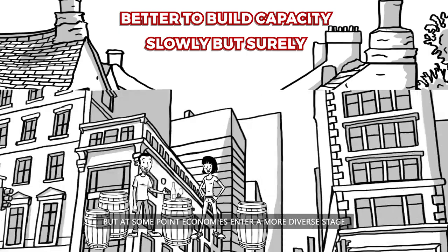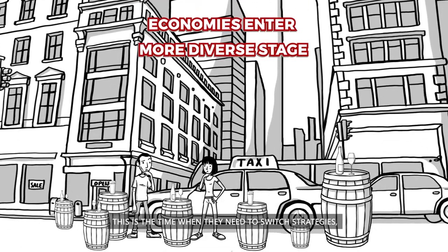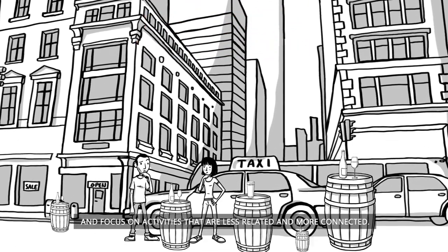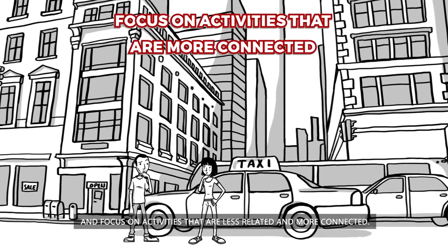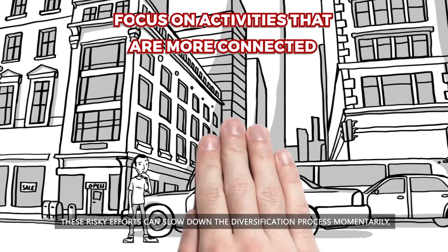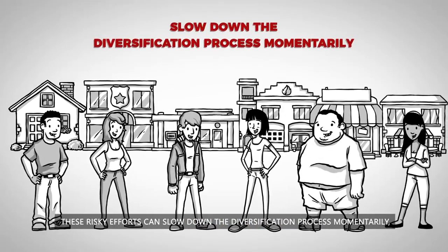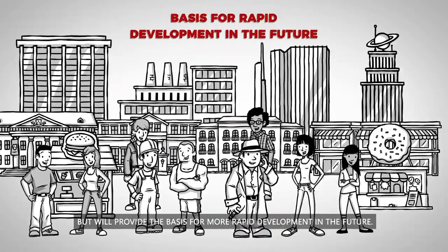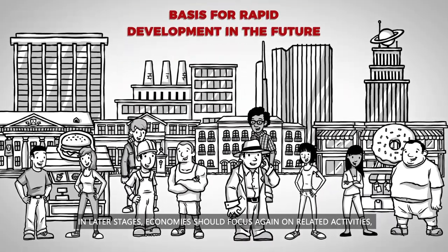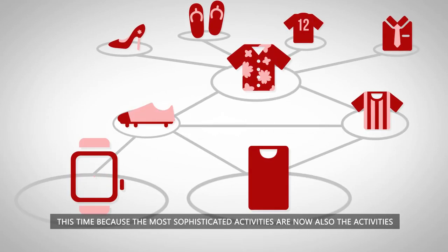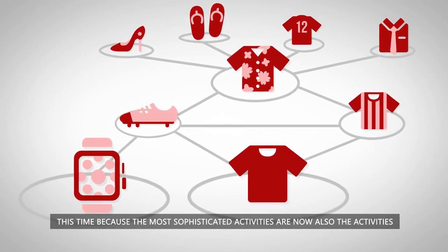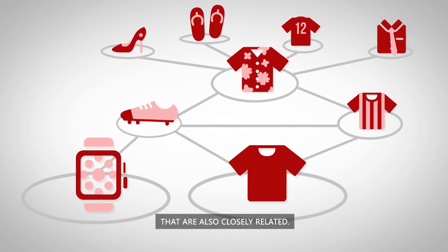But at some point, economies enter a more diverse stage. This is the time when they need to switch strategies and focus on activities that are less related and more connected. These risky efforts can slow down the diversification process momentarily, but will provide the basis for more rapid development in the future. In later stages, economies should focus again on related activities, because the most sophisticated activities are now also the ones that are closely related.